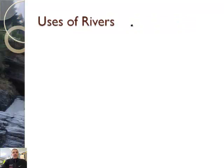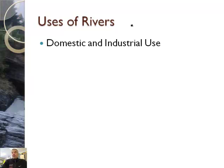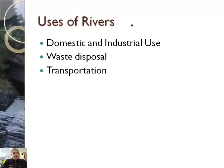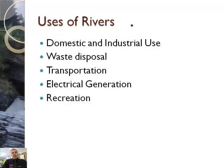Rivers are used for many things — let's talk about how rivers are used as a last topic. They're used for domestic and industrial use: you drink water, and factories use them industrially. We also use rivers for waste disposal, though that's usually not a good choice — water needs to be treated first. Rivers are used for transportation, electrical power generation — specifically hydroelectric power — and recreation. There's other uses too, but that's a pretty good list, and I'll have some experts talk about them.